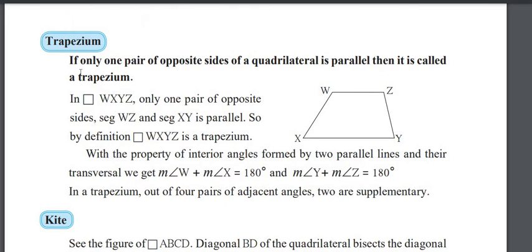This one is a trapezium. What is meant by trapezium? If only one pair of opposite sides of a quadrilateral is parallel, then it is called a trapezium — one pair of sides is parallel.